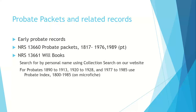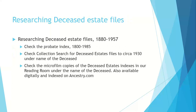Deceased estate files are probably more interesting in terms of trade and business. First check the probate index — generally if people left a will, they'll also have a deceased estate file. Also check collection search, as deceased estates to circa 1930 are listed there. For those after 1930, you may need to check the microfilm copies of the deceased estate index available in our reading room, which is also available digitally and has been indexed on Ancestry.com. This is searchable only under the name of the deceased.